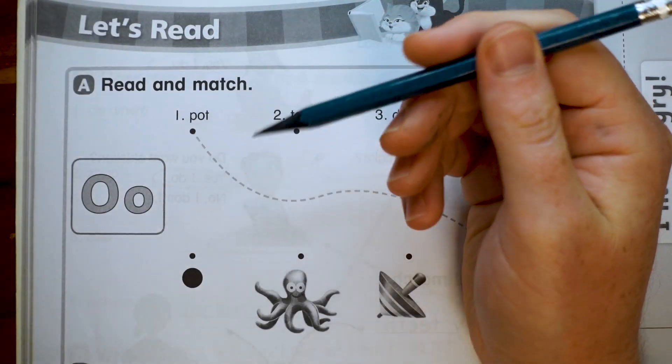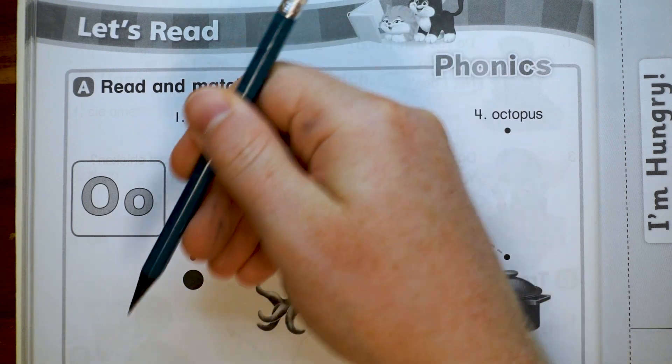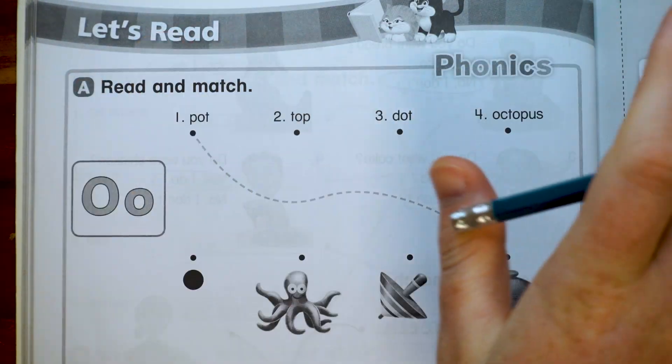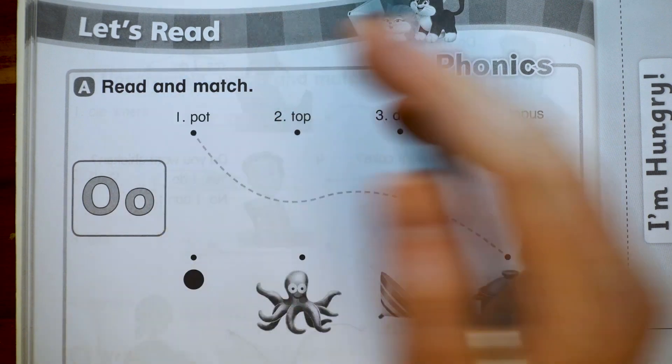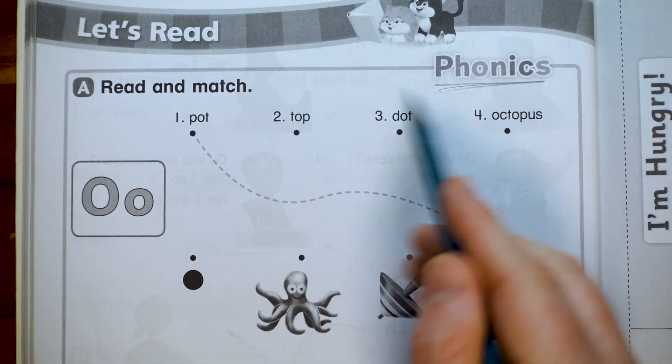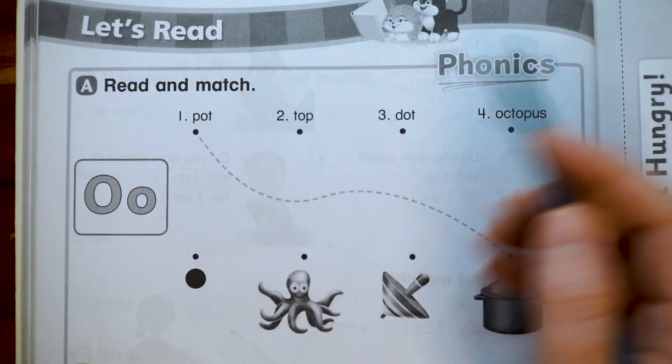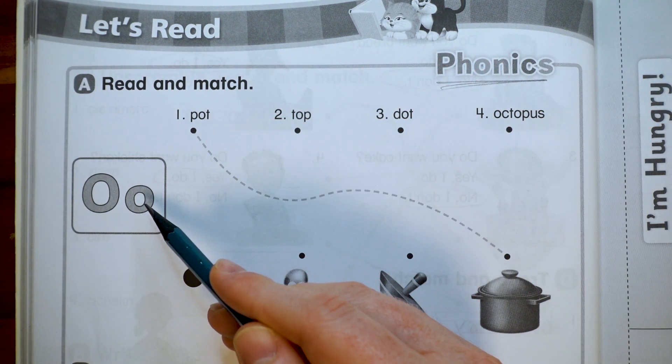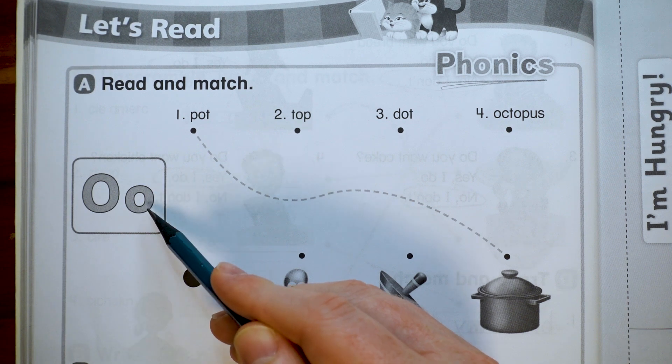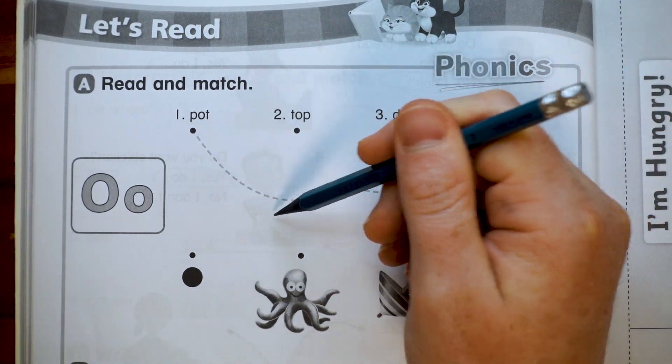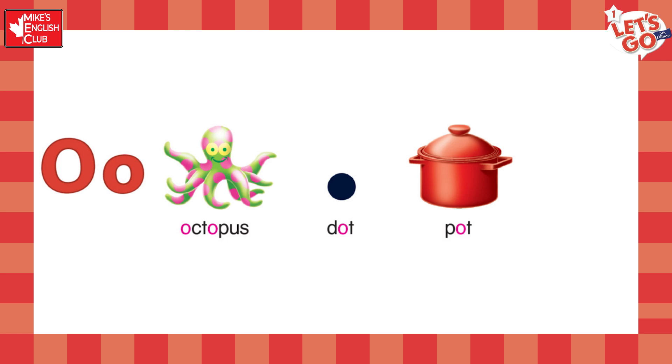Hello everybody, we're back with pages 62 and that's it, no more pages. It is the Let's Read section, or the phonics section for unit 7. In this phonics section we talked about the short o sound, like octopus, dot, pot, top.